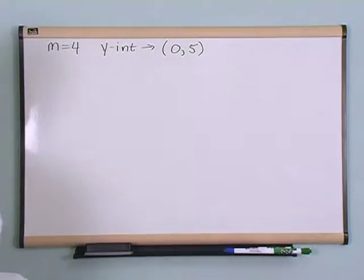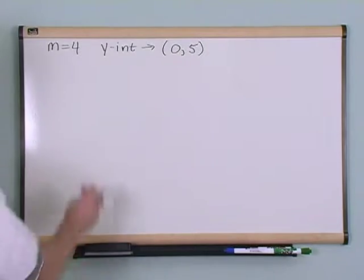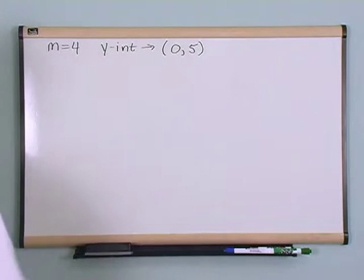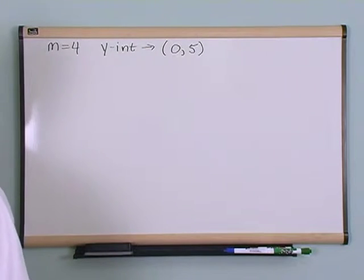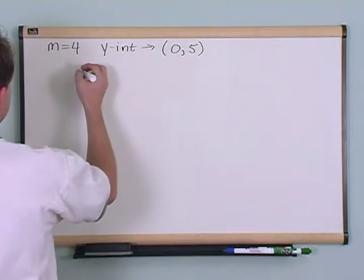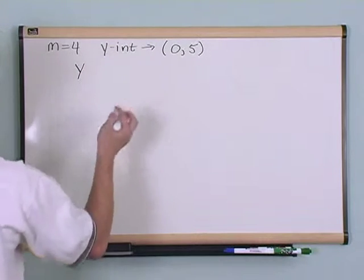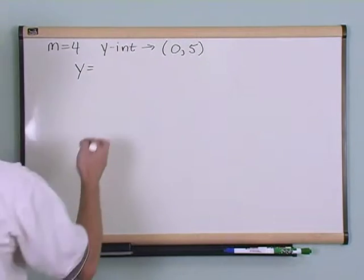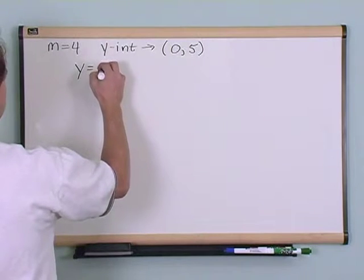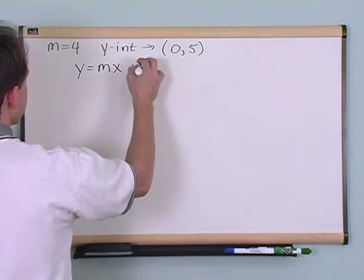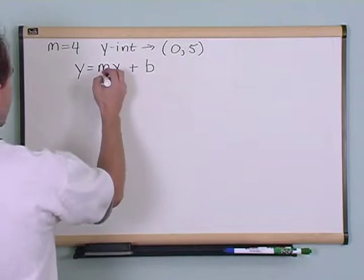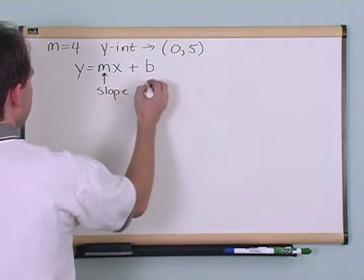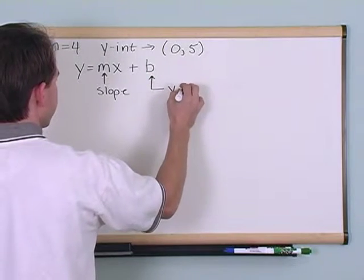And then the question on the test or quiz is given these two pieces of information, the slope and the y-intercept, write down the equation of the line. Just to jog your memory, the general form of what I consider the easiest equation of a line formula to remember is y = mx + b, where m is the slope and b is what we call the y-intercept.